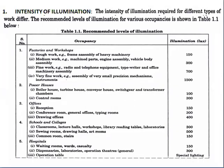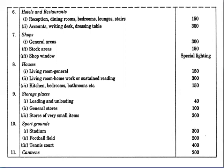Control rooms: 300 lux. Offices — reception: 150 lux; conference rooms, general offices, typing rooms: 300 lux; drawing offices: 400 lux. Schools and colleges — classrooms, lecture halls, workshops, library reading tables, laboratories: 300 lux; drawing halls, art rooms: 500 lux; common rooms and stairs: 150 lux. Hospitals — waiting rooms, wards, casualty: 150 lux; dispensaries, laboratories, operation theatre (general): 300 lux; operation table: special lighting according to requirements. Hotels and restaurants — reception, dining rooms, bedrooms, lounges, stairs: 150 lux.